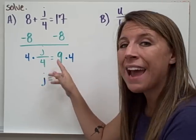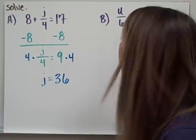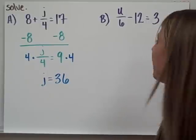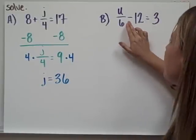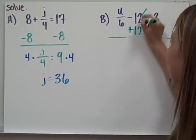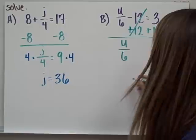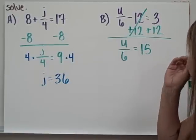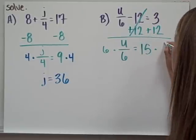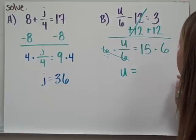Now to undo division, I have to multiply on both sides by 4. That leaves me with j equals 36 from 9 times 4. So let's do this one together. I have u divided by 6 minus 12 equals 3. Well, I want to get rid of what's added or subtracted to my variable first, and I know that it's minus 12. So the opposite of subtraction is addition. So I'll go ahead and add 12 to both sides. I know that this equals 0. So on the left side, I'm left with u divided by 6 equals 15. Opposite of division is multiplication. So I'm going to multiply both sides by 6. This leaves me with u equals 15 times 6 is 90.